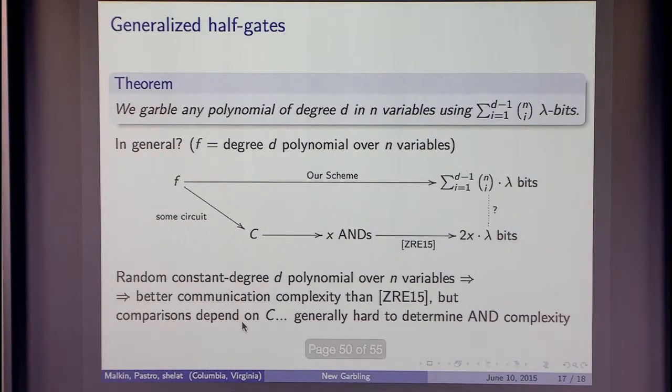In general, we have that you can garble any polynomial of degree d in n variables with this communication complexity. So it means that if you're given this polynomial, you'll get this. If you want to use the half gates, you have to find a circuit for it. And it will have a number of ANDs. And double the amount of that will be the number of rows that are needed. So we have a result that says that for random constant degree polynomials over n variables, essentially, it's better to just garble it via our scheme than finding a circuit and then using the half gates. Because it's not clear how to find a good circuit for that metric. But if there are methods that allow you to improve, the situation might change. So it's not very clear in very general terms for communication complexity. But there are some examples where we're better today.